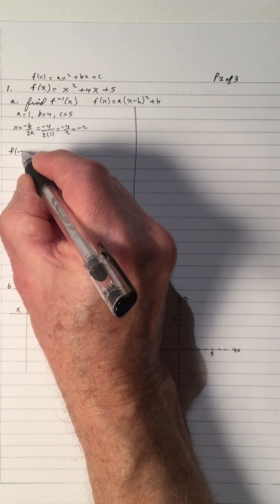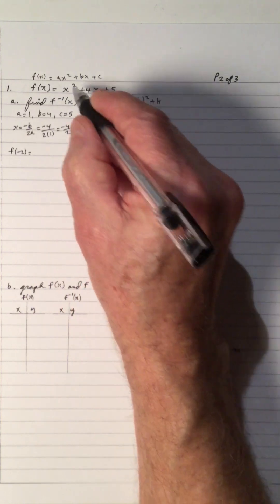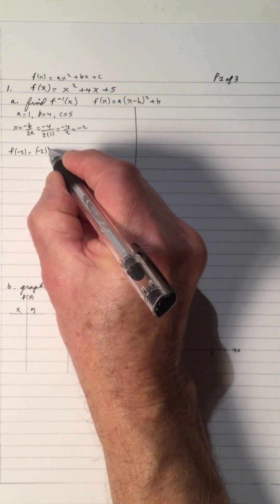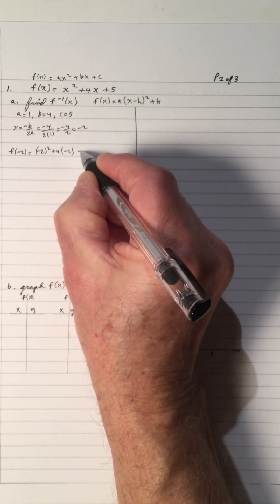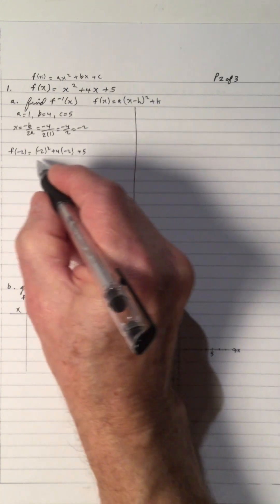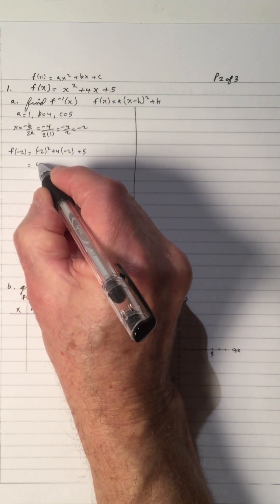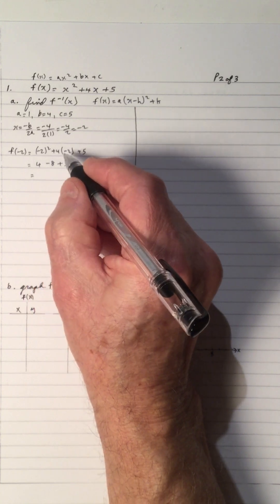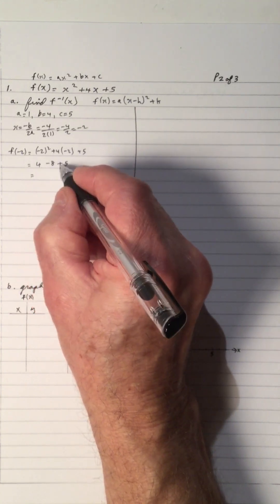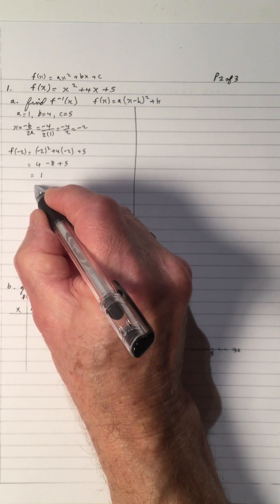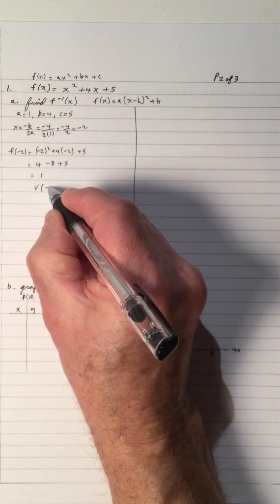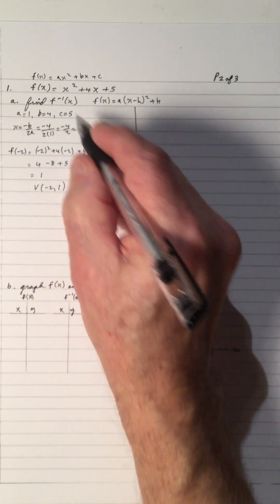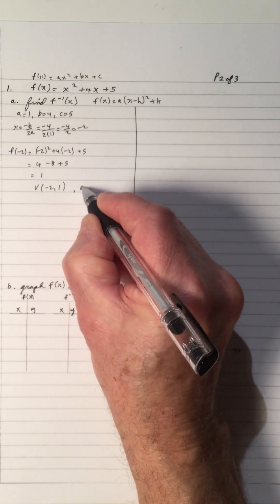So f of negative 2 — now I'm going to take the negative 2 and put it into this expression, x is negative 2. And f of negative 2 is 4 minus 8 plus 5. So that's 9 minus 8, which is 1. So that means the vertex is x is negative 2, y is 1. And a is 1.